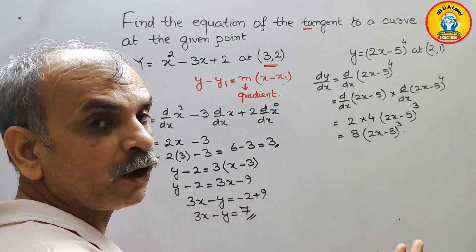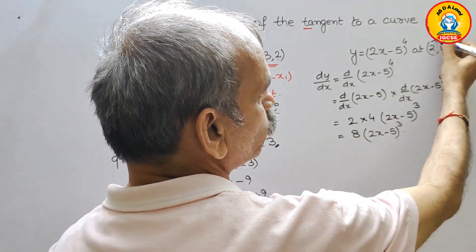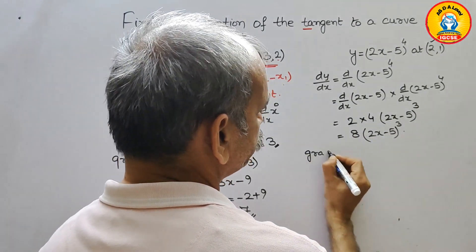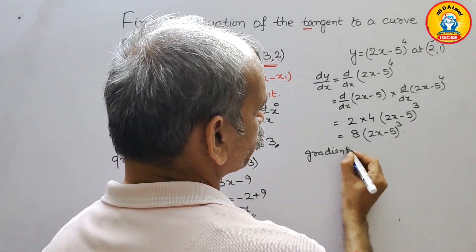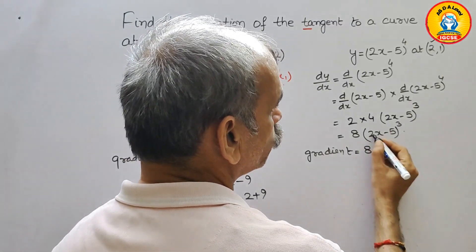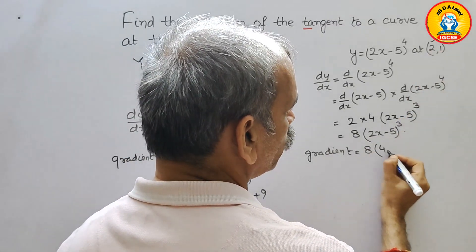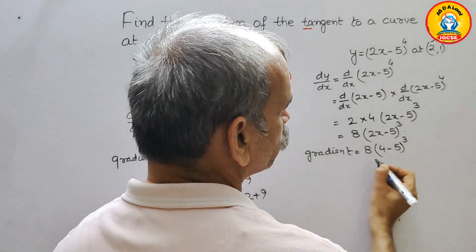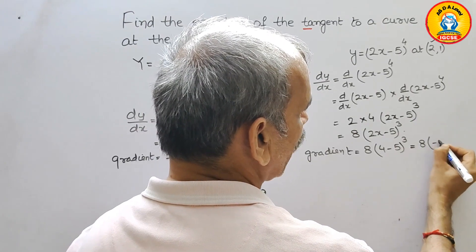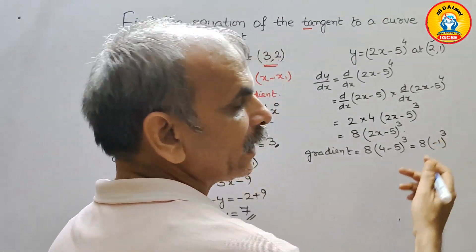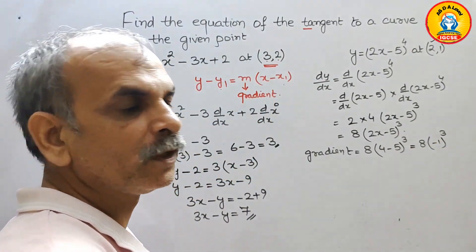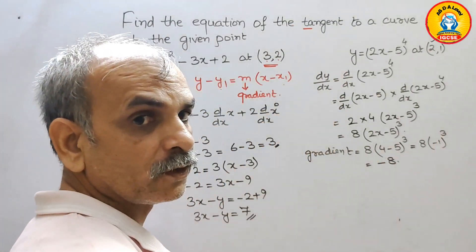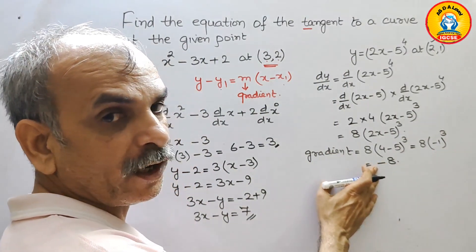Now we will find the gradient by substituting x equals 2. Gradient equals 8 times (2 times 2 minus 5) cubed, which is 8 times (4 minus 5) cubed, equals 8 times (minus 1) cubed. Minus 1 cubed is minus 1, so minus 1 times 8 gives gradient equals minus 8.